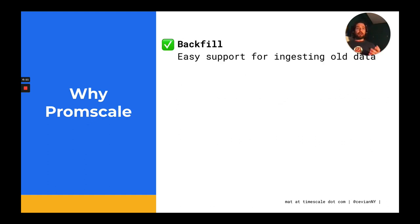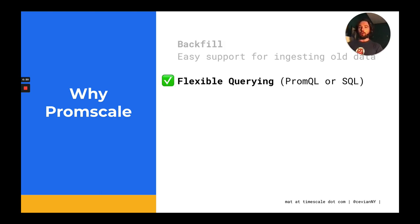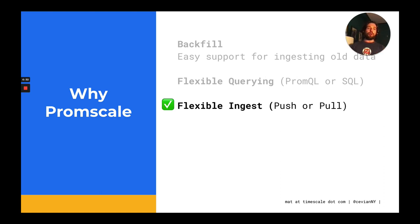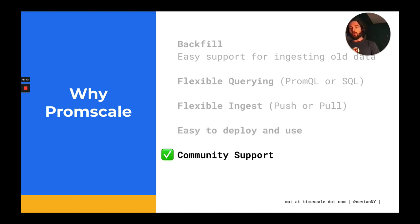I also asked the user why they chose PromScale. One of the main reasons was backfill. It turns out that this team had legacy data they wanted to be in the same centralized data repository as the new data. They wanted flexible querying, and they wanted both push and pull, as shown in the architecture slide. They found it easy to use and deploy.